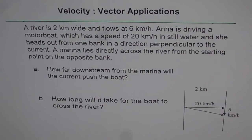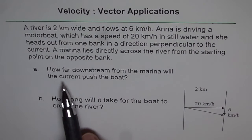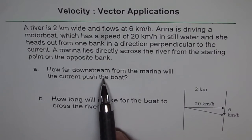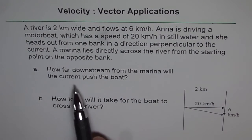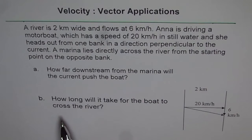A marina lies directly across the river from the starting point on the opposite bank. Part A of the question is, how far downstream from the marina will the current push the boat? And Part B is, how long will it take for the boat to cross the river?